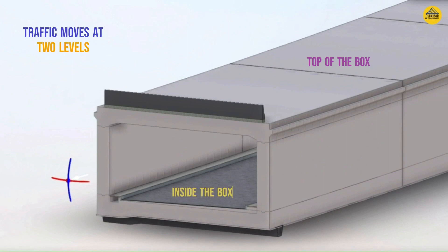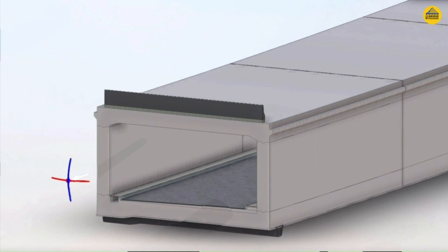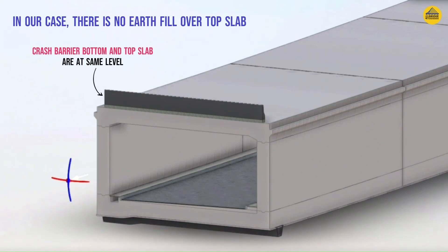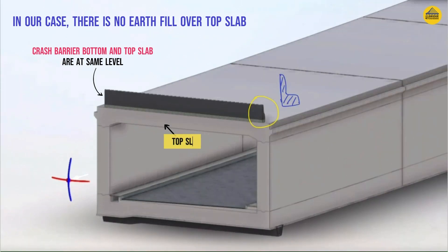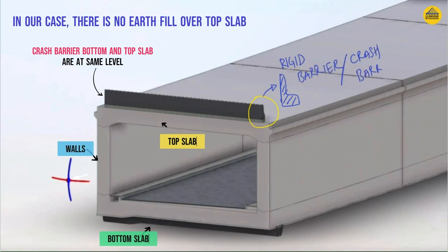It is very important to note that in this case the crash barrier level and the top slab level are at the same point, hence there is no earth fill. If there is earth fill, then many other factors are impacted such as live load dispersion, braking forces, temperature forces, and the availability of corbel or bracket. That is why we are not considering any earth fill over the top slab in this case. But in episode number 2 we will have a structure where considerable earth fill will be there, and we will see how that arrangement is different.